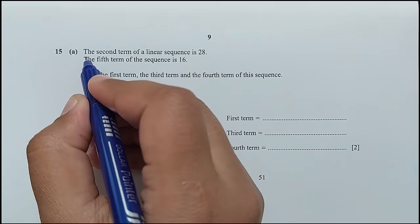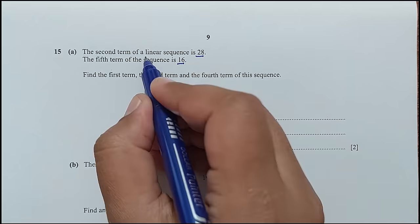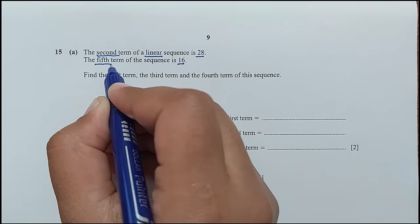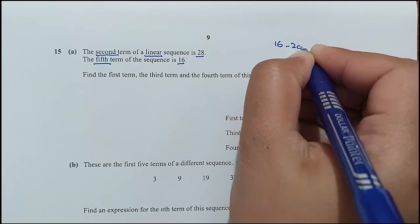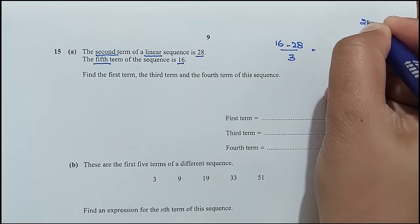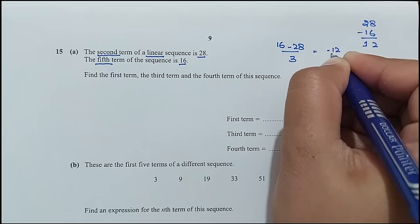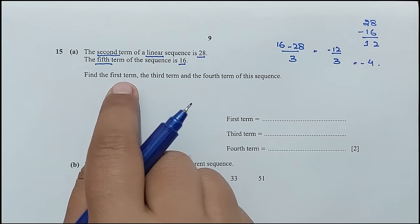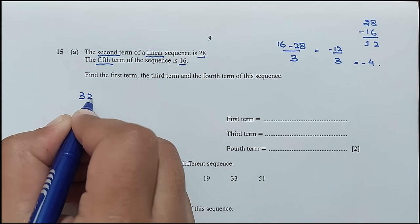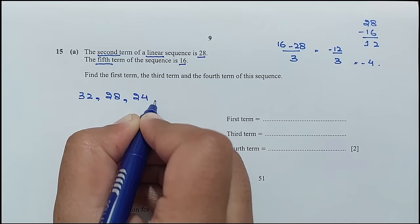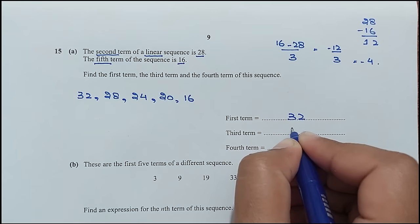Question number 15, part A: the second term of a linear sequence is 28 and the fifth term is 16. The difference between terms is (16 minus 28) divided by 3 equals minus 12 over 3, which is negative 4. So the common difference is minus 4. The first term is 32, third term is 24, and fourth term is 20.